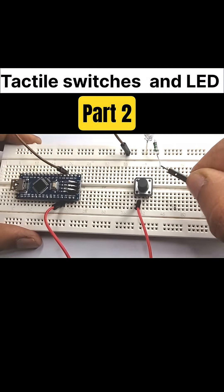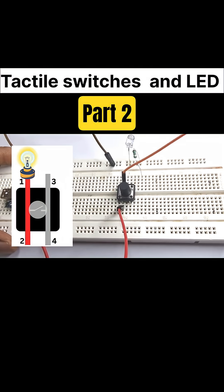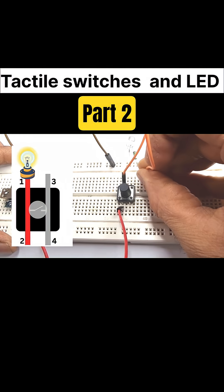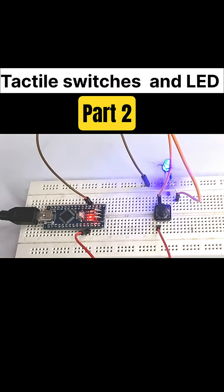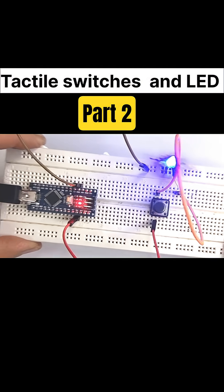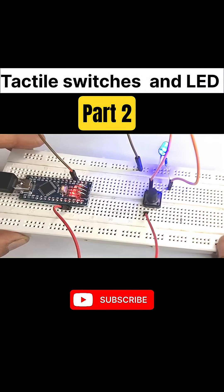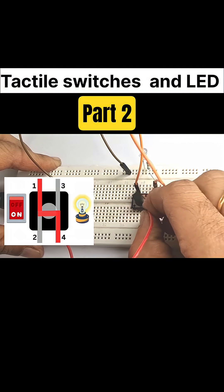After that, I connect another jumper wire from pin 1 of the tactile switch to the resistor going to the LED. After powering on, the LED turns on directly. This is because pins 1 and 2 are internally connected, so I moved the jumper to pins 1 and 4.